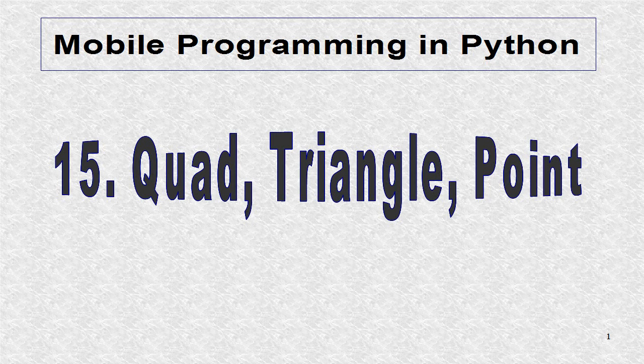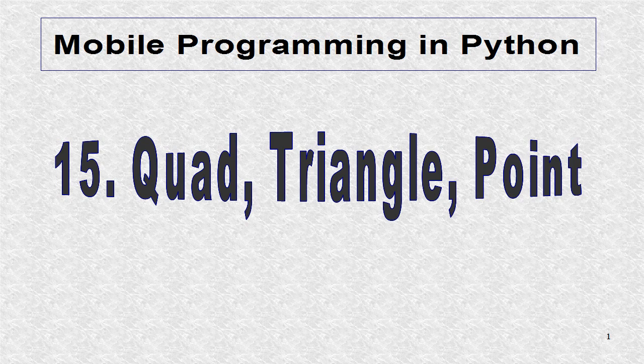Quad, Triangle, and Point are three vertex canvas instructions. For all three, we have to give a set of points.